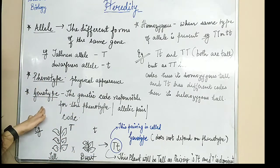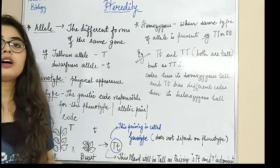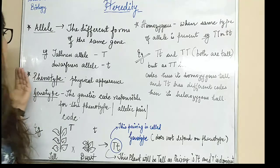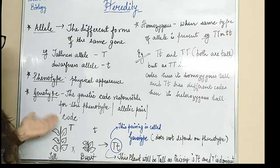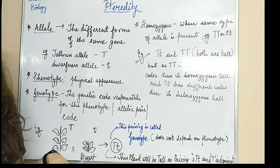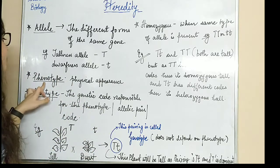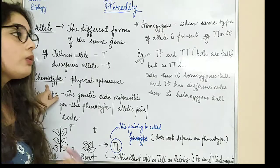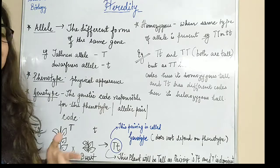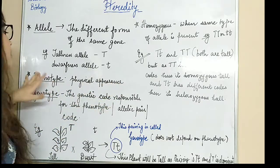Now, what comes next is phenotype and genotype. In the next video, we will be starting with the monohybrid and dihybrid cross, where we will study phenotype and genotype in detail with big examples. But here you need to know the phenotypic ratio. Phenotype basically refers to how the plant is physically appearing — it depends on physical appearance.